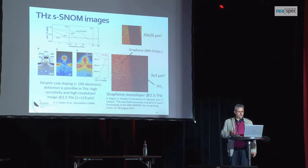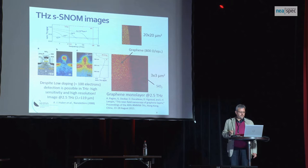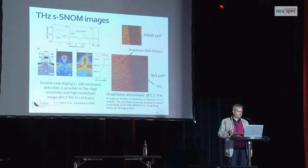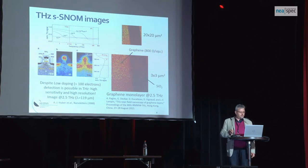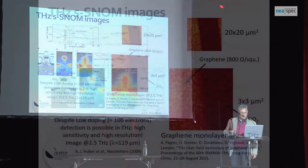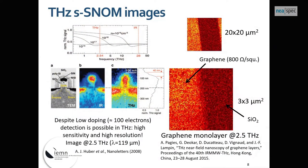Here are a few examples of SNOM images. You may know this famous paper from 2008, and on the right you can see our first image in the Terahertz range — I believe it was the first image of a graphene layer in the Terahertz range, using Kelvin's norm at 2.5 Terahertz with a standard probe, much shorter than the wavelength. The graphene was etched, and we can clearly see the contrast between graphene and the SiO2 substrate.